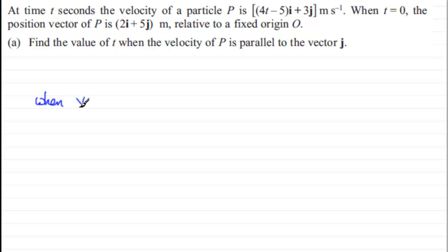That is that when v is parallel to j, then what we've got is that the i component equals zero.